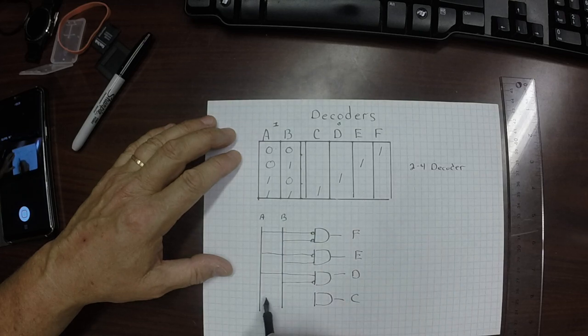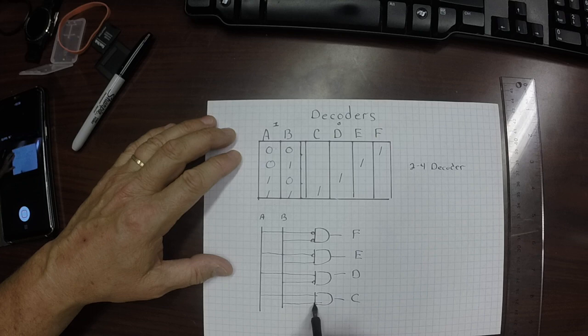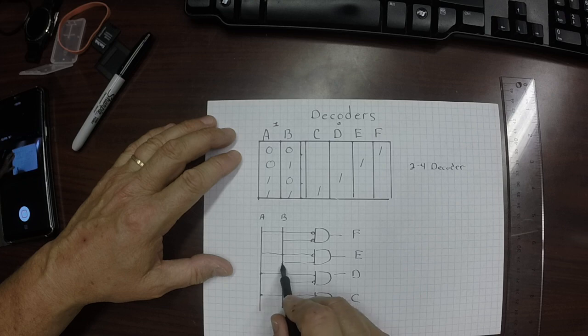And then finally, the C wire. We bring in A and B. Not negated, excuse me, right there. And we'll just make that connected.